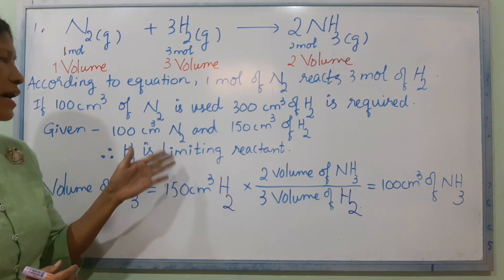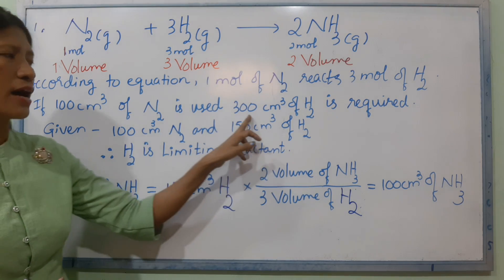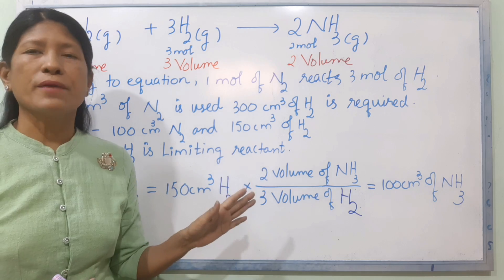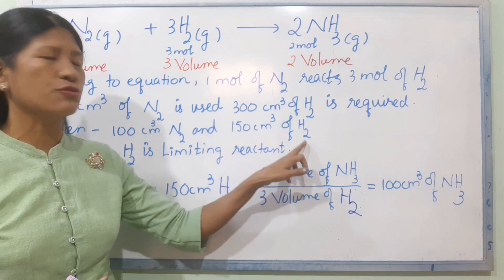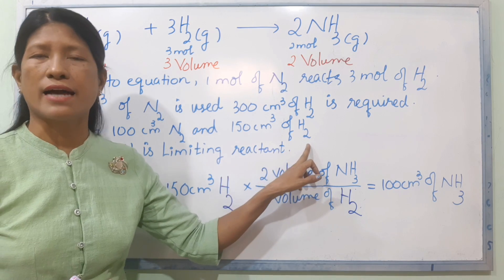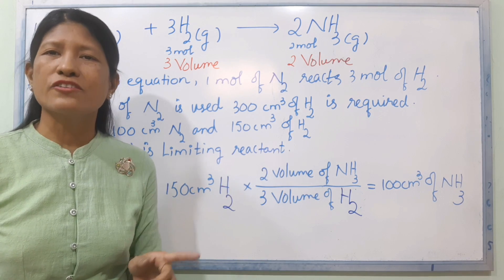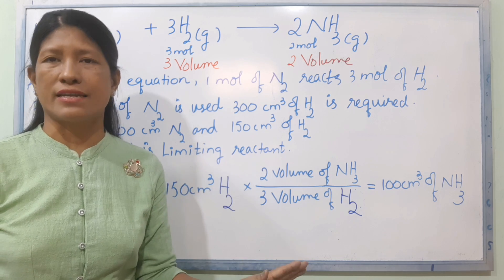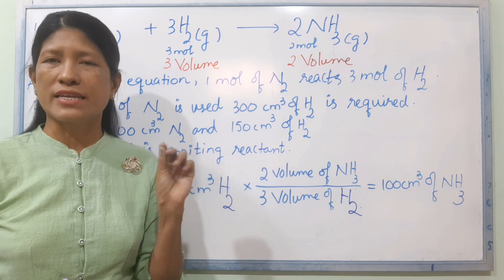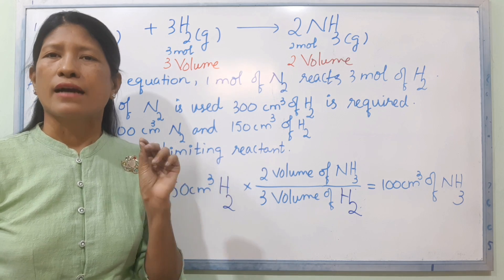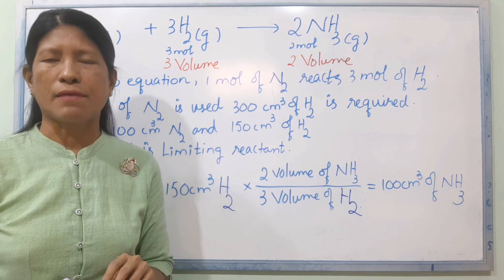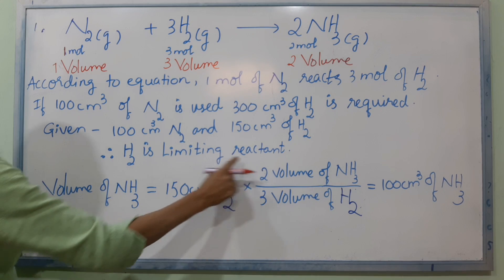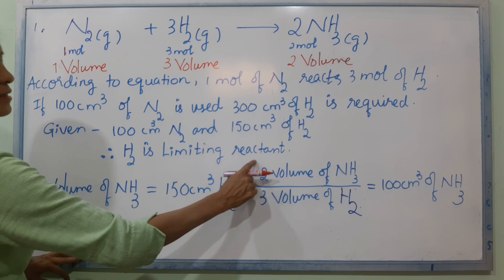The ratio is 1 to 3 of nitrogen to hydrogen. But the available hydrogen exceeds what is needed, so hydrogen is the limiting reactant. H2 is the limiting reactor.